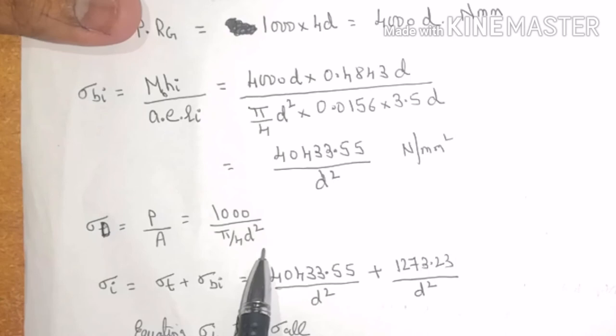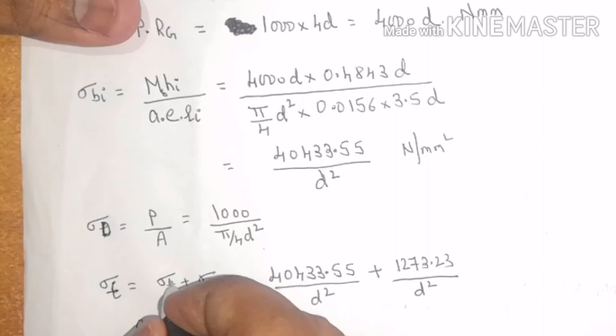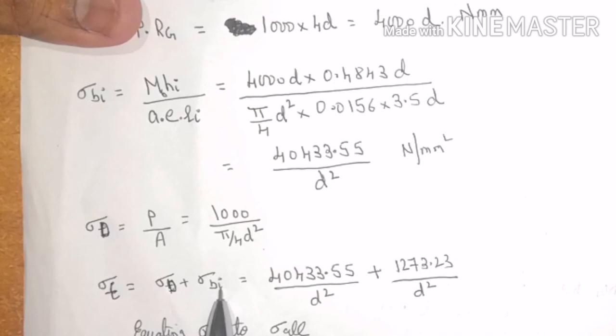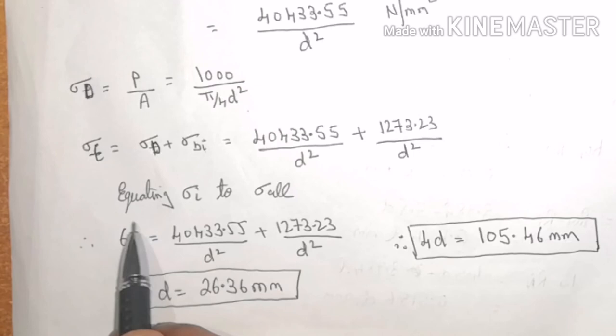The total stress will be sigma T, that is total, will be equal to sigma direct plus sigma B internal, or sigma B at inner fiber. Adding these two and equating the same to the allowable value, that is 60.